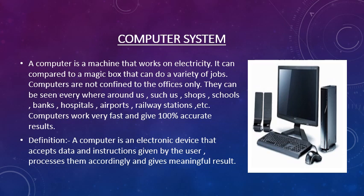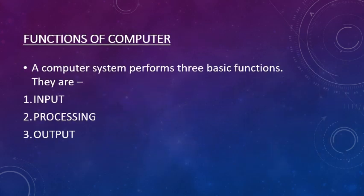airports, railway stations, etc. Computers work very fast and give hundred percent accurate results. The definition of computer is: a computer is an electronic device that accepts data and instructions given by the user, processes them accordingly, and gives meaningful results. The next topic is functions of computer. A computer system performs three basic functions: input, processing, and output.